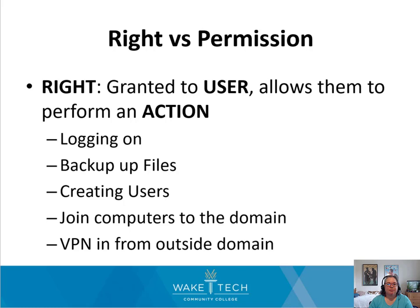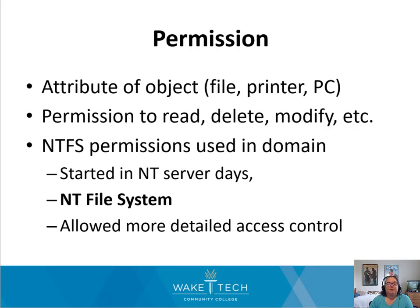We've talked about permissions in this class, but we haven't talked about the distinction between rights and permissions. Rights are given to a user specifically and allow them to do actions — usually having to do with accessing resources like backing up files, logging on to a computer, creating users, joining a domain, or VPNing from the outside. Permissions have to do with objects themselves and their attributes — such as whether I have permission to change a printer's default settings, modify a file for good or just one-time use, read a file, or reserve a room.